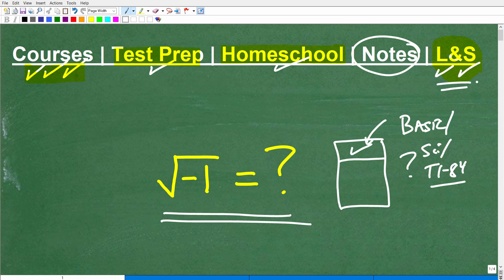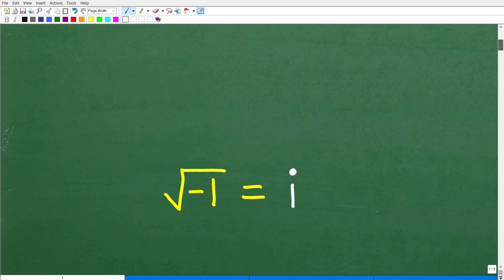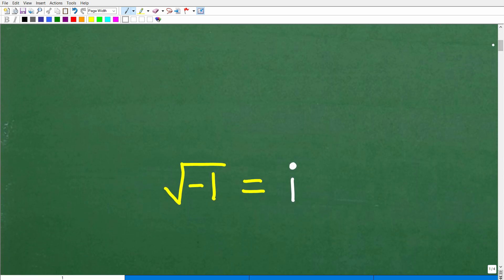So, okay, let's go ahead and get to the answer. The square root of negative one is equal to what? Well, let me go ahead and show you the answer right now. It's equal to i.